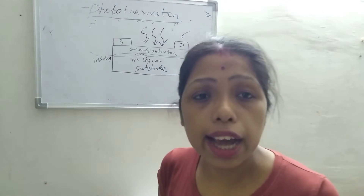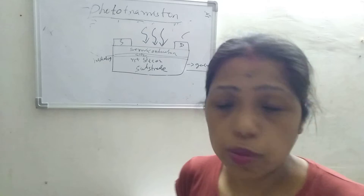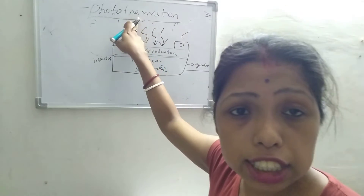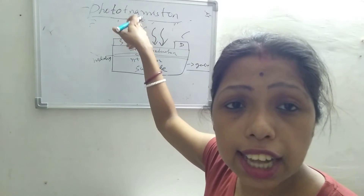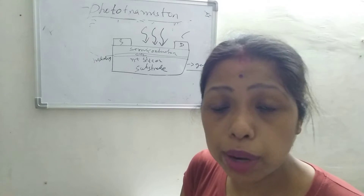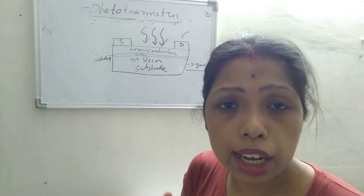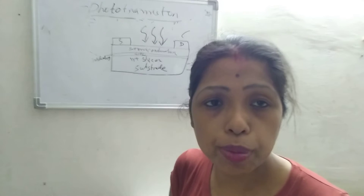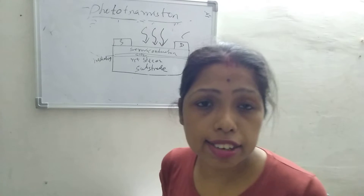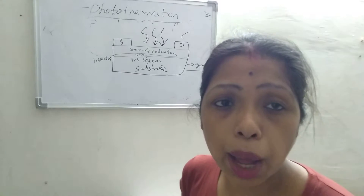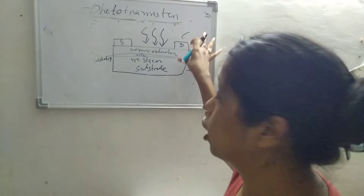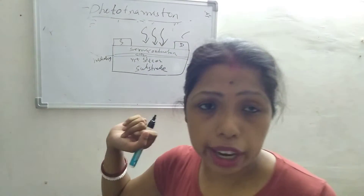This photocurrent will be in the amplified form. Because the phototransistor, the transistor is acting as the amplifier. The optical signal that will be detected by the transistor will give the electrical signal which will be in the form of the amplifier. So in this way you will get the photocurrent — amplified photocurrent.